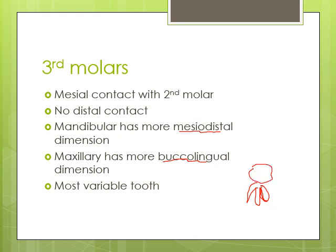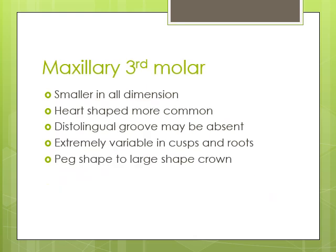In the maxillary third molar, the more common crown shapes are heart-shaped and rhomboidal. They could also be as small as a peg shape — we can see a peg-shaped molar in the case of third molars. They are smaller in dimension and most variable. The distal lingual groove could be absent; if present, the crown is rhomboidal in shape and the distal lingual cusp could be present.